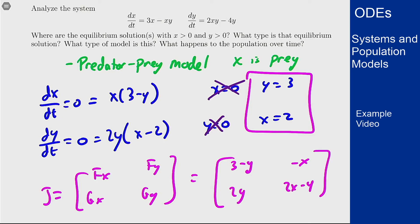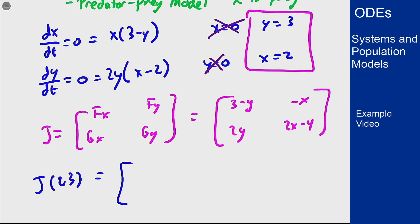If I plug in my point here, (2,3), I'm going to get 3 - 3 is 0, negative 2, 2y is 6, and 2x - 4 is 0.